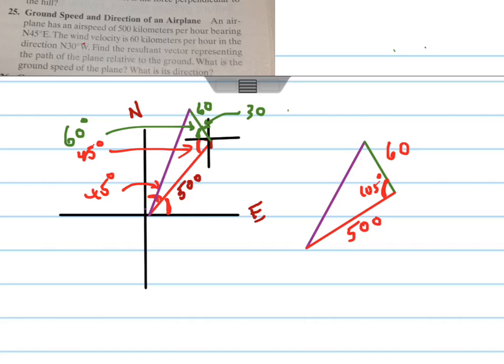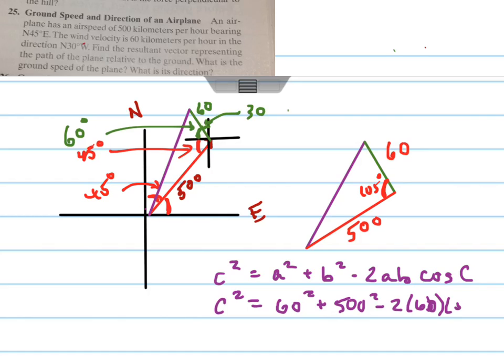And the law of cosines is, if you remember correctly, there's your law of cosines. So we have c squared equals 60 squared plus 500 squared minus 2 times 60 times 500 times the cosine of 105 degrees. And when I solve that, you'll get 518.78 kilometers per hour. So that's this right here, 518.78.